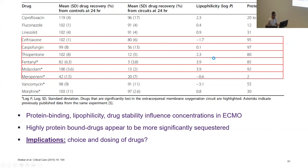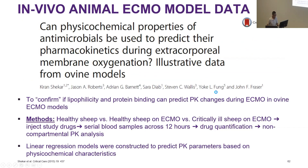A table shows drug recovery across 24 hours with corresponding protein binding and log P values. Significant reduction in drug recovery was demonstrated for ceftriaxone, caspofungin, thiopentone, fentanyl, midazolam, and for meropenem it relates to drug stability due to its instability in the circuit. The key points are: protein binding, lipophilicity, and drug stability influence concentrations in ECMO. Highly protein-bound drugs appear more significantly sequestered, especially when combined with high lipophilicity. The implication is that choice of drugs and dosing for patients receiving ECMO may differ from critically ill patients without ECMO support.